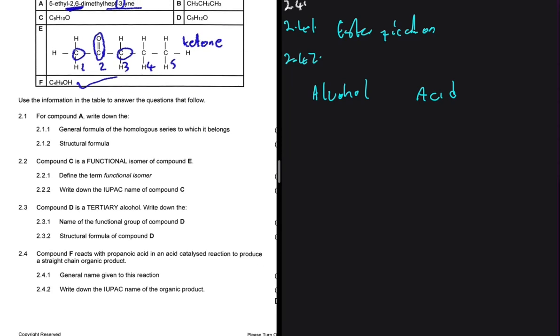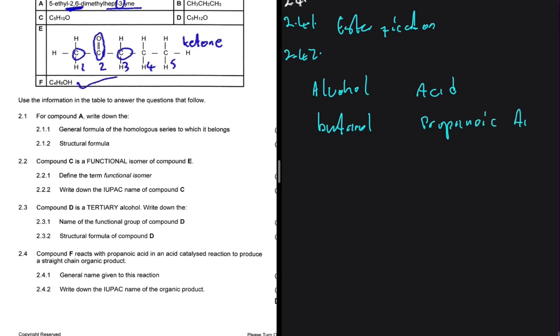So the alcohol that is used, it has four carbons. So if it has four carbons, then it's butanol, and the acid that is used is propanoic acid. And then now the name of our product will be butylpropanoate. That is how we name an ester.